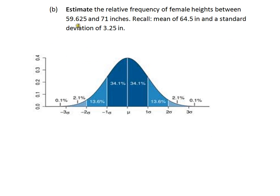In example B, we're being asked to estimate the relative frequency of female heights that will occur between 59.625 inches and 71 inches. Recall: mean of 64.5 inches and a standard deviation of 3.25 inches. Now in this case, the key word here is estimate. Because we're being asked to estimate the relative frequency or the percentage of female heights, we can use the empirical rule or sometimes called the 68-95-99 rule.